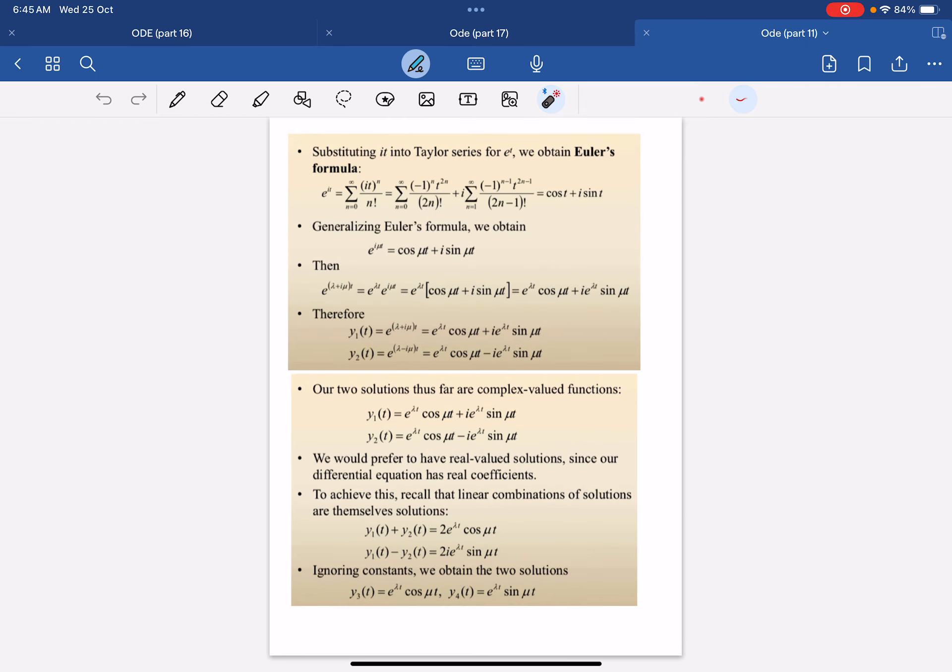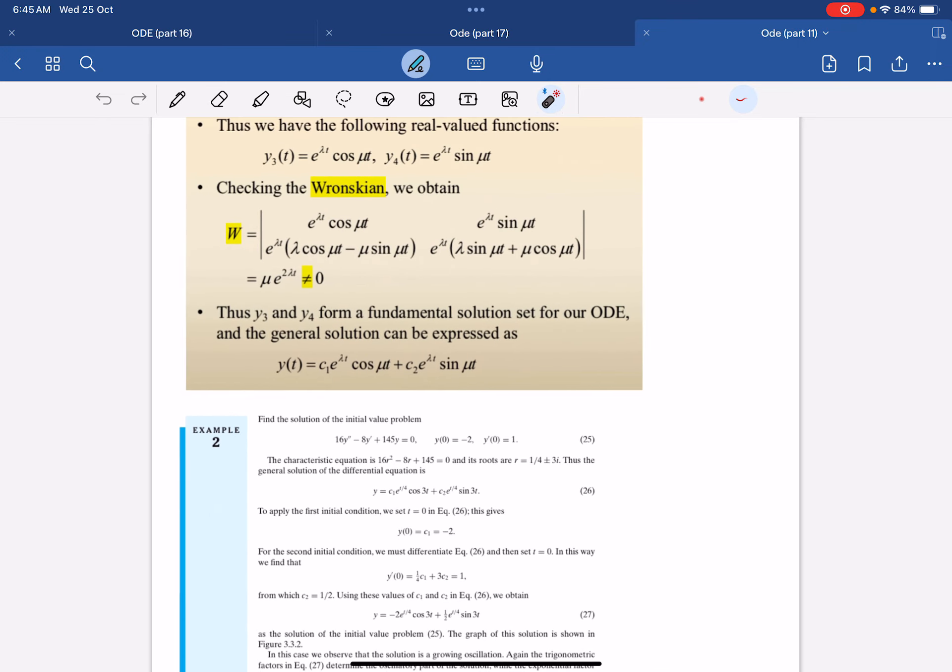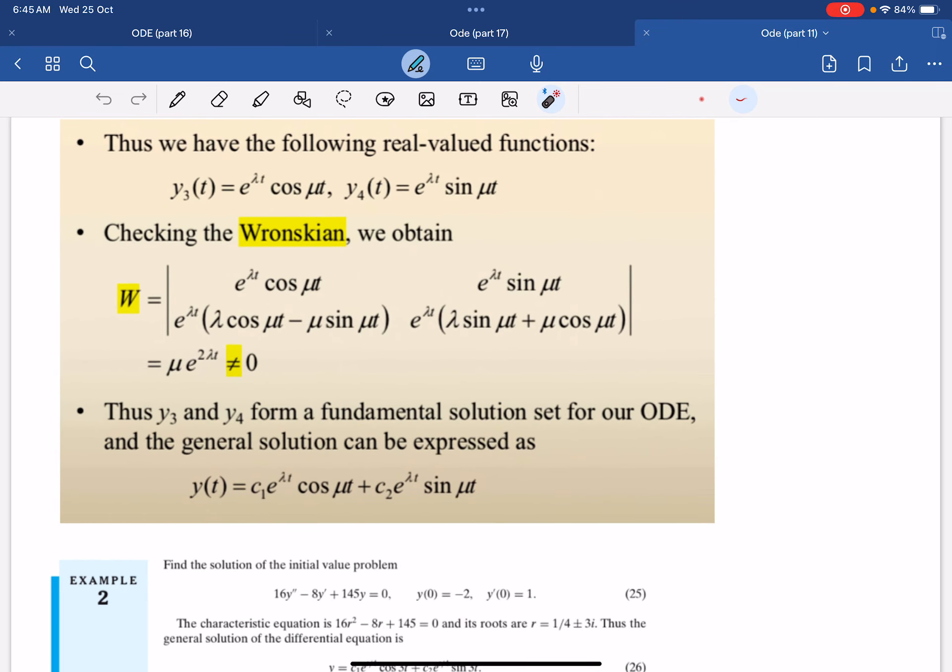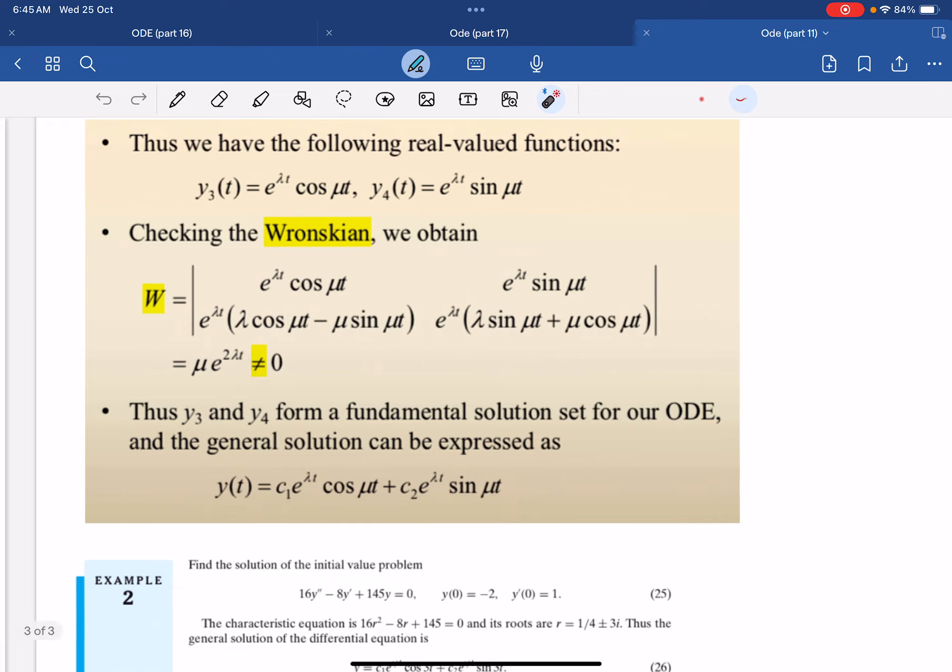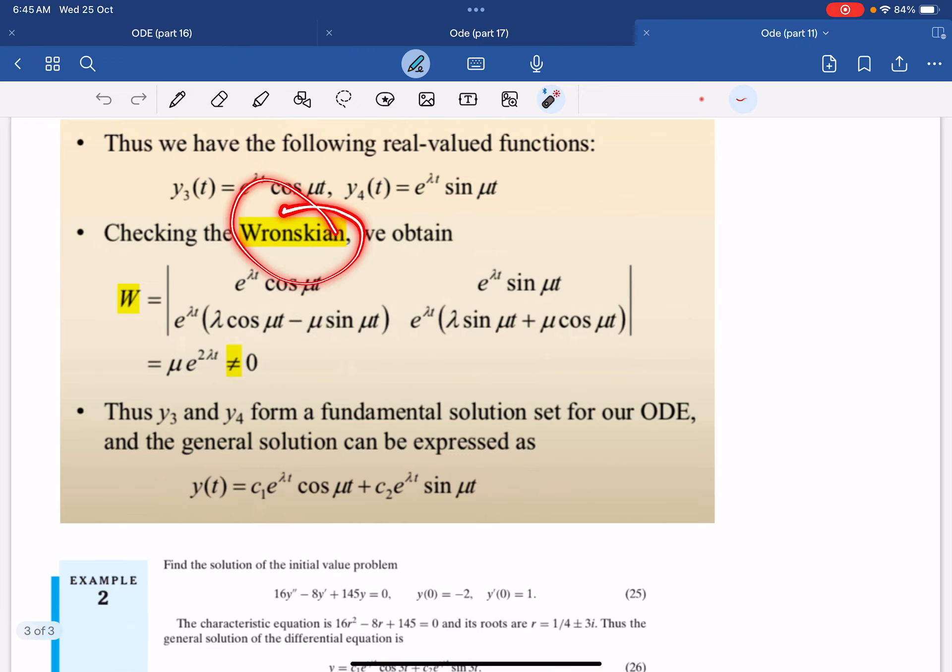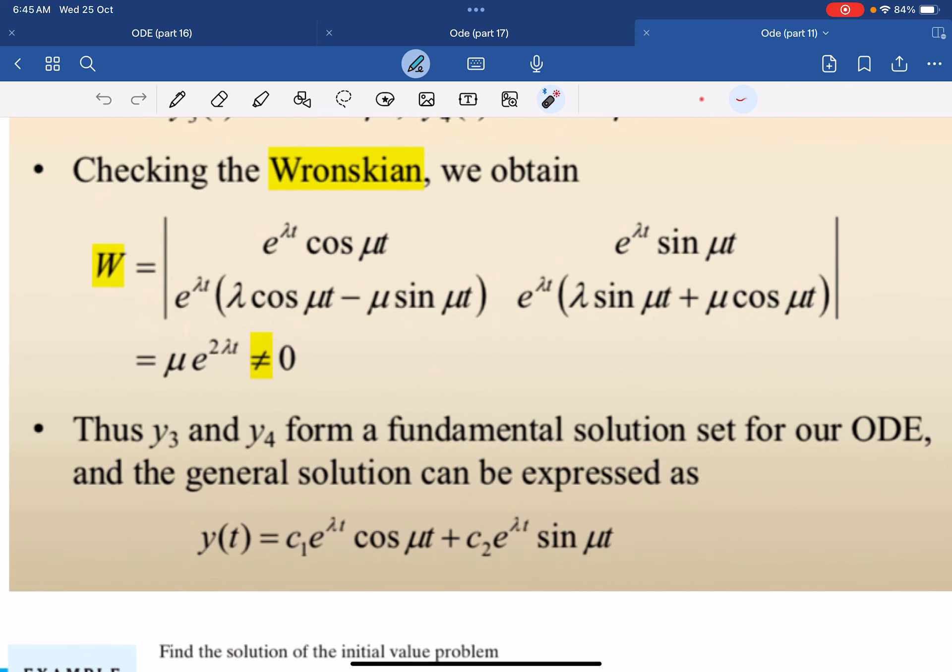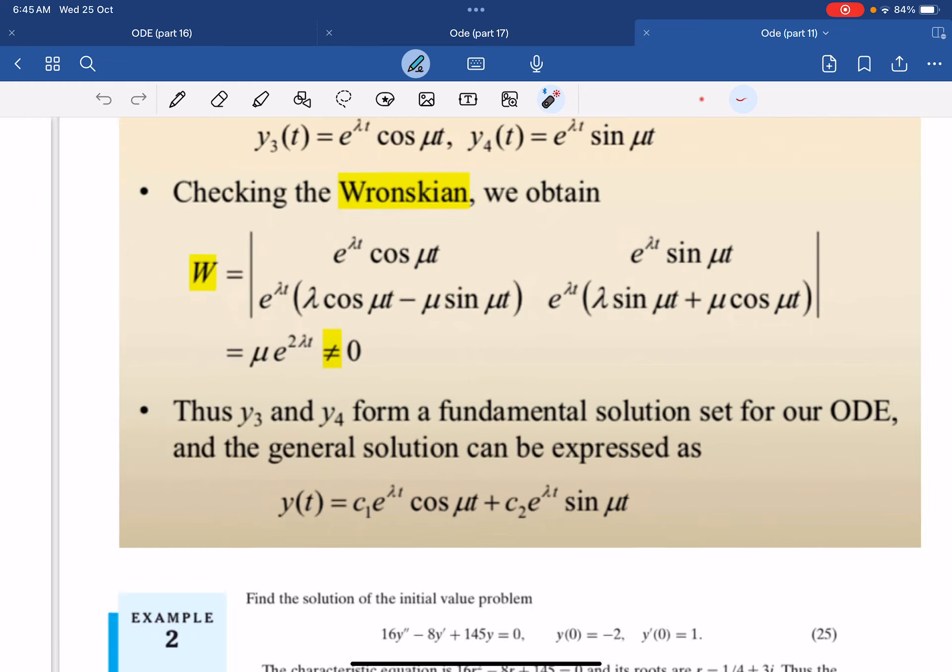And this will be our new set of solutions. So now we just need to check that there are fundamental set of solutions. And we just check by using Ebert's theorem. So we just find the Wronskian of these solutions, which is the determinant of this matrix. You arrive at mu e to the 2 lambda t. And you recognize that this can never be zero because mu is non-zero. E is also non-zero.